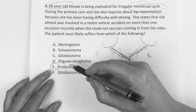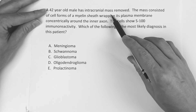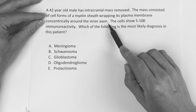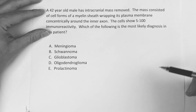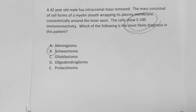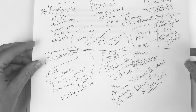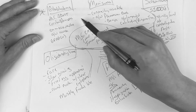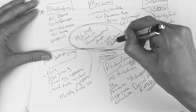The correct answer on question three is prolactinoma. The last one: a 42-year-old male has an intracranial mass removed. The mass consisted of cells forming myelin sheets wrapping plasma membrane concentrically around the inner axon, and the cells show S100 immunoreactivity. Anytime you see S100 and you have to give a choice of tumors, you're going to jump all over schwannoma. To review: there are five main adult tumors — glioblastoma, meningioma, schwannoma, oligodendroglioma, and pituitary adenoma. If someone's immunocompromised, think lymphoma. Hope this was helpful, guys.